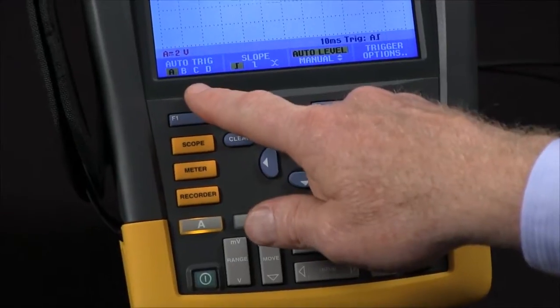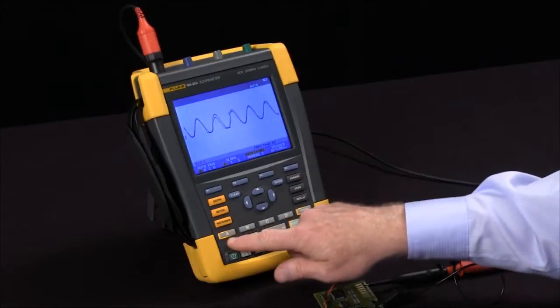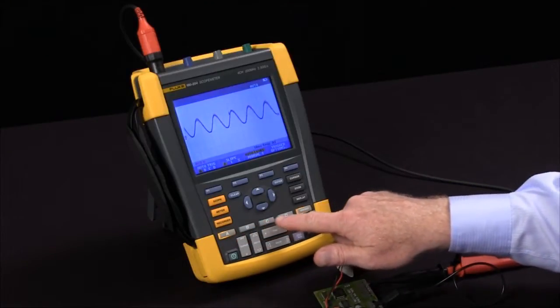We can select the channel to trigger off of with the F1 key. We're on channel A right now. We could also trigger on channel B, C, or D.